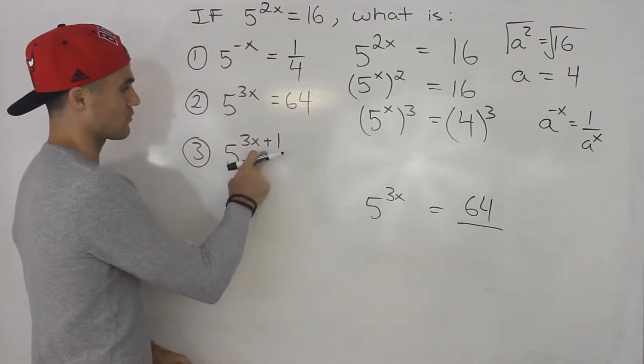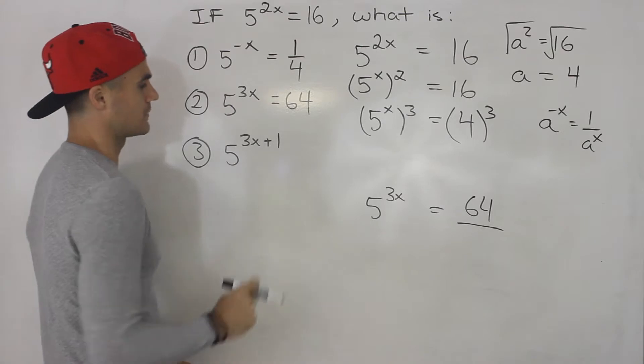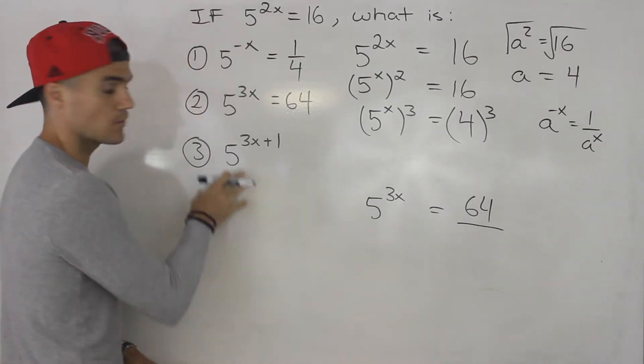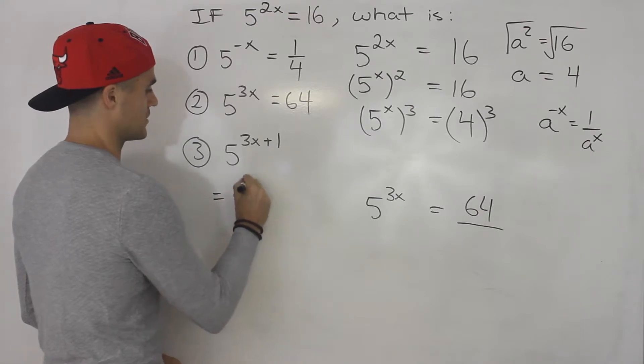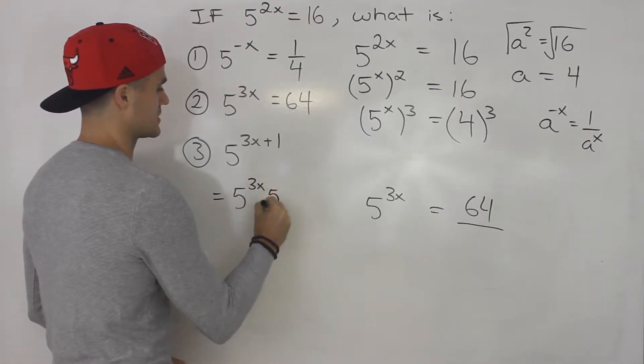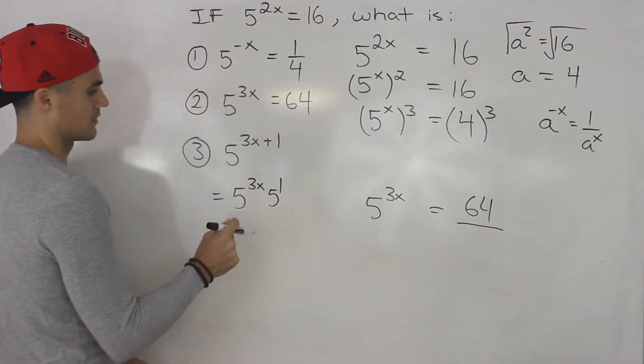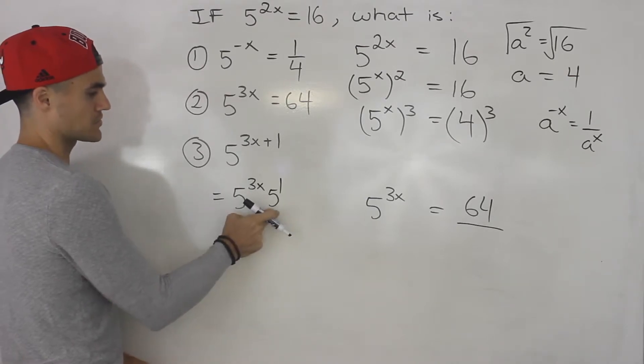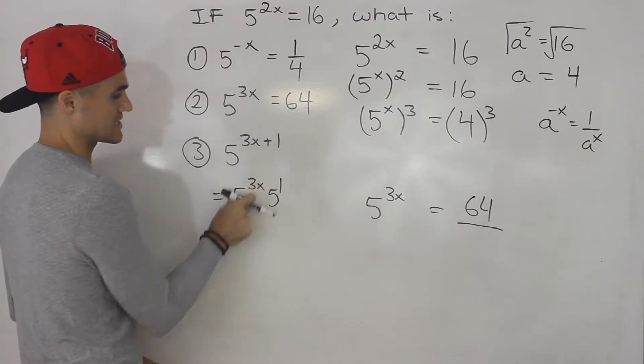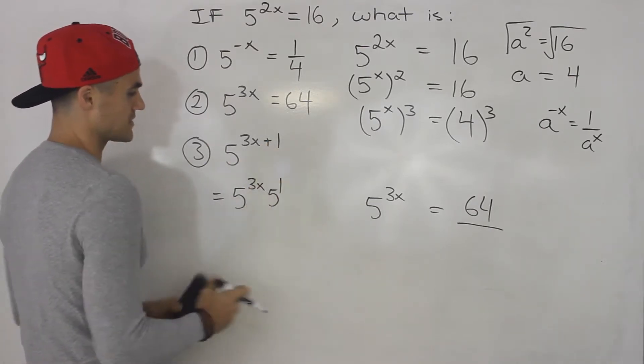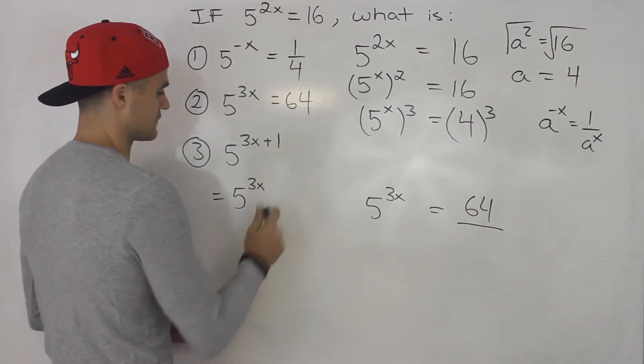And then finally, we got 5 to the 3x plus 1. This one's a little bit more tricky. What you want to do with this one is you actually want to split this up into 5 to the 3x times 5 to the 1, right? Because if you're multiplying exponents with the same base, you're just adding the exponents. So we're kind of going backwards, taking this and splitting it up. And then 5 to the power of 1 is just 5.